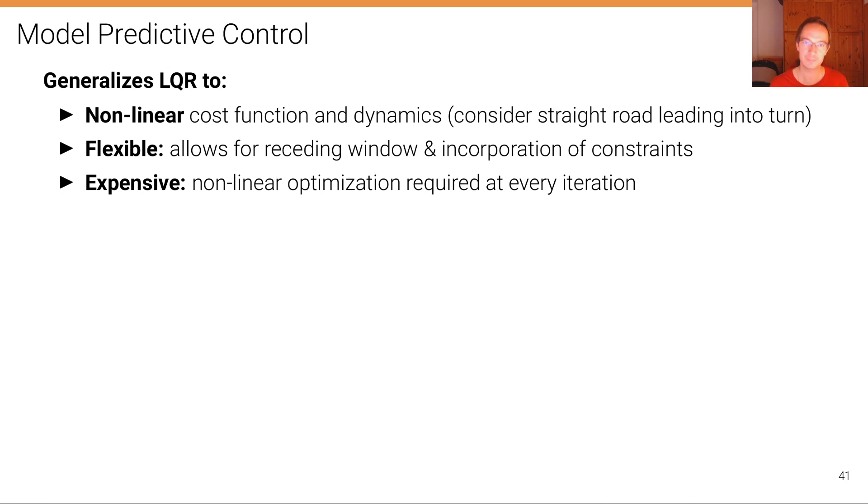However, as already mentioned, it's more expensive. We require a nonlinear optimization at every iteration at which we execute our controller. Controllers are typically executed at very high rates—in order to control a system, you have to execute a controller maybe one thousand times per second.